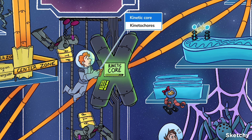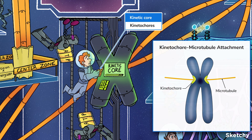Kinetochores are another component of mitotic and meiotic spindles. These protein complexes allow microtubules to attach to the centromere, which is the DNA sequence in the center of a chromosome that holds duplicated chromatids together. Once kinetochores attach microtubules to centromeres, microtubules can pull apart the sister chromatids.